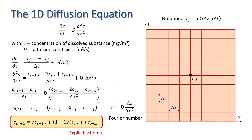This can be used directly as an explicit finite difference scheme. Note that although the second derivative is second-order accurate, the scheme is only first-order accurate because of the approximation used for dc/dt.